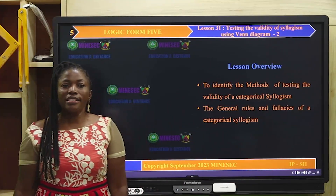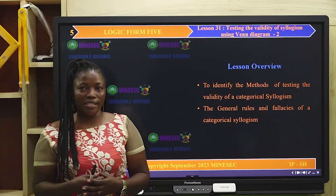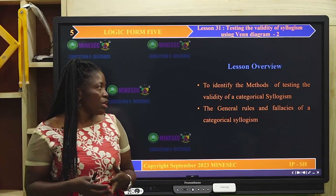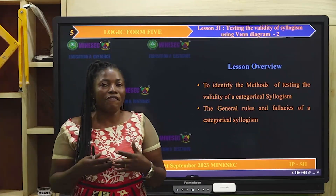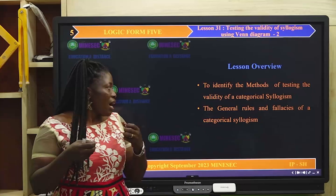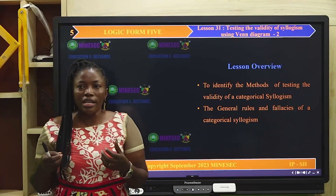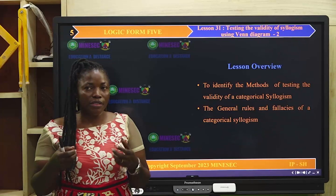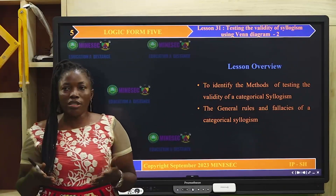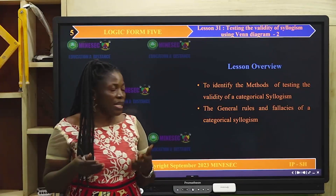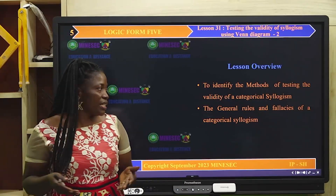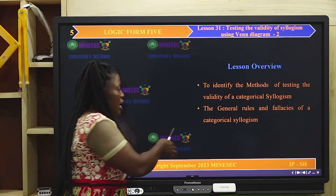Lesson overview. Why this lesson? We are going to identify the methods of testing the validity of a categorical syllogism, and equally see that the general rules of the validity of an argument are revisited, including the fallacies of categorical syllogism.